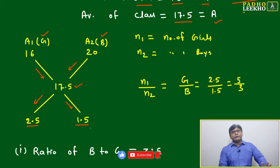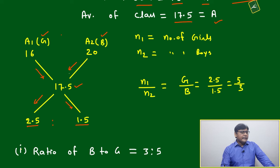This will be in ratio. Means n1 by n2 will be equal to ratio. Always you have to take in same order like this. This is your girls, number of girls. This is your average of girls.